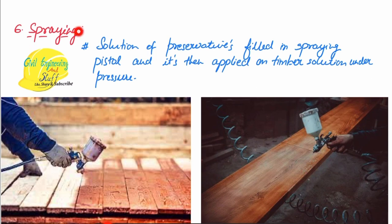The last method is spraying. The preservative solution is put into a sprayer, the wood surface is first cleaned, and then the preservative is sprayed over it. This is again a very simple method of applying preservatives over the timber surface. These are the main methods by which preservatives are applied.